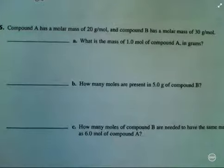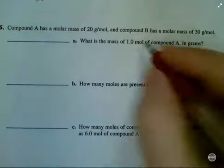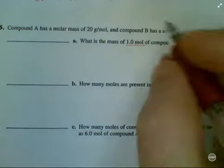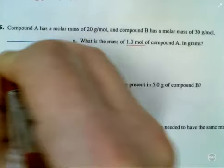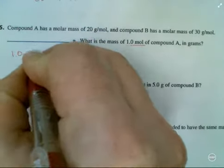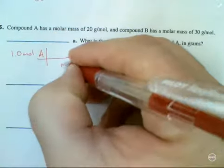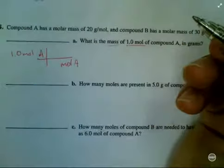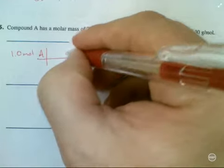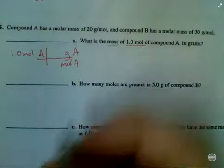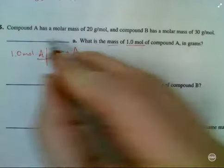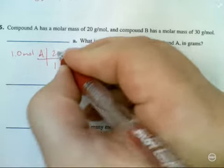So let's get ready. Part A: What is the mass of 1.0 moles of compound A in grams? Now, the question starts with one mole of A, so I'm going to start with one mole of A. And it wants me to convert to mass. I have moles, and I want to get out of moles. I'm going to put that on the bottom of my conversion factor. I'm going to put grams on top. But how many grams per one mole of A is there? There's 20 grams.